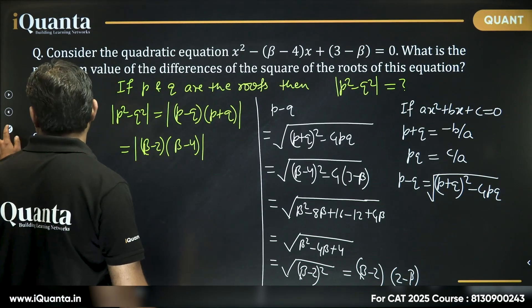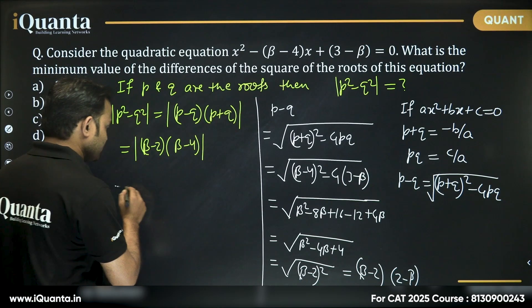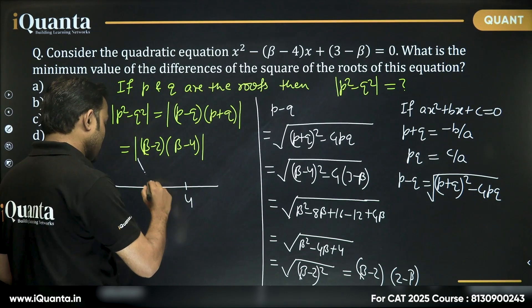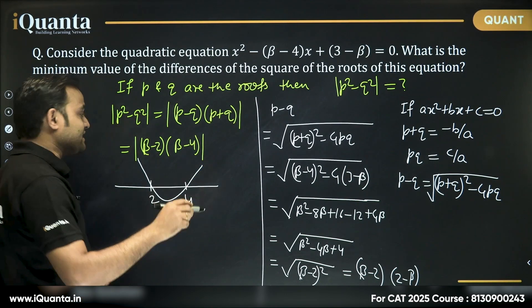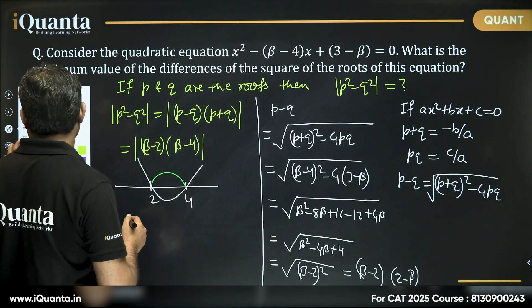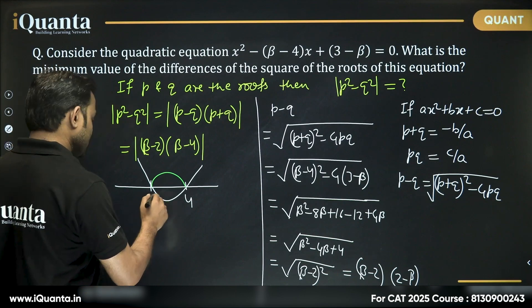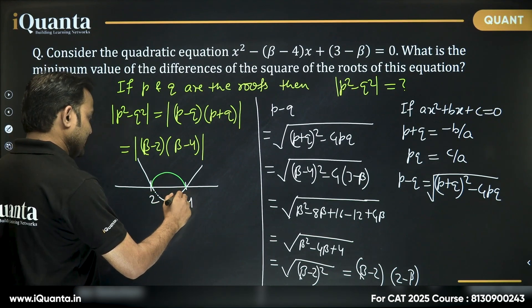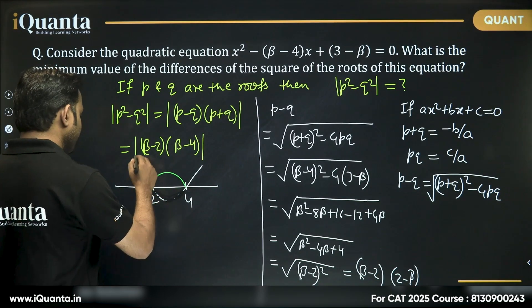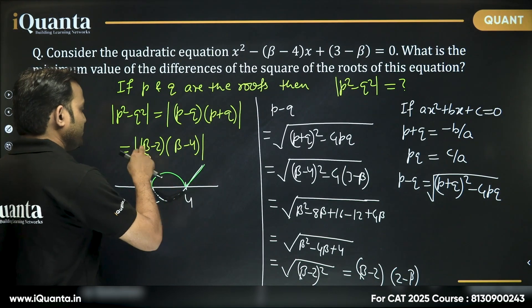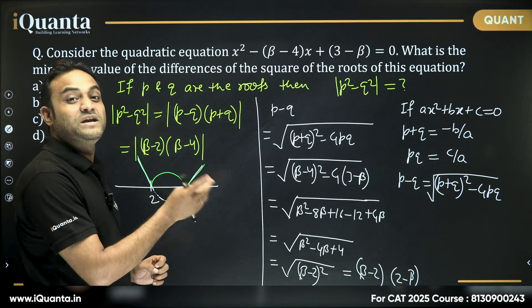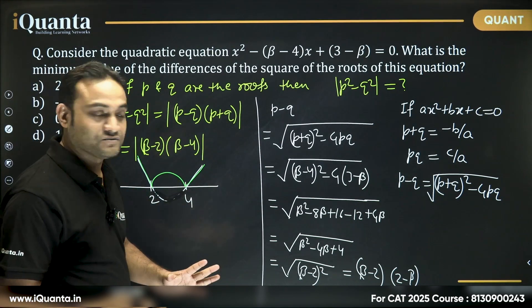If I try to draw the graph of the expression (β − 2)(β − 4), the graph will look like a standard upward parabola. But if I take the mod, the negative portion becomes positive, so the graph of |(β − 2)(β − 4)| has a minimum value of 0.